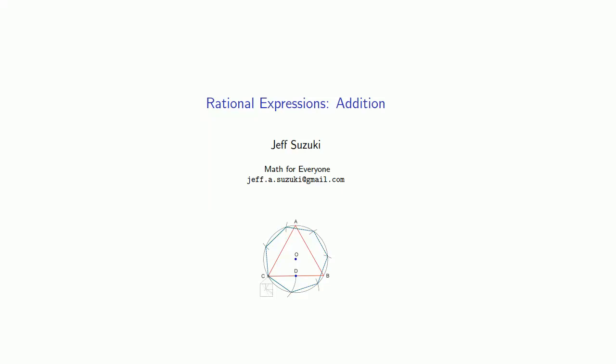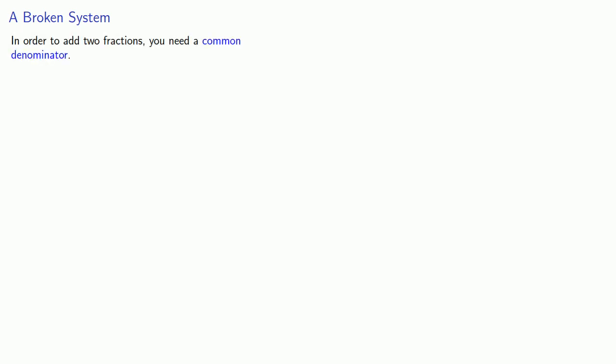So how can we add rational expressions? It's useful to remember that rational expressions are to polynomials what fractions are to the whole numbers. So let's consider what happens when we add two fractions. In order to add two fractions, you need a common denominator.